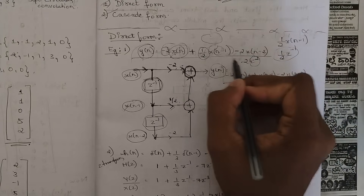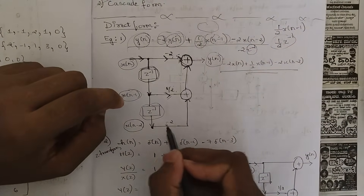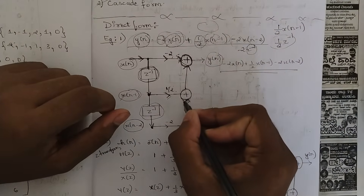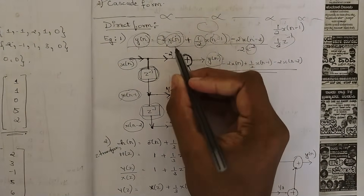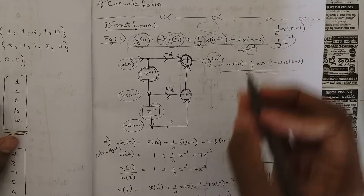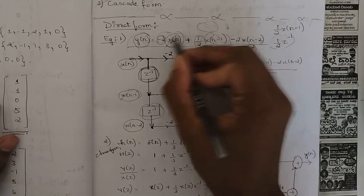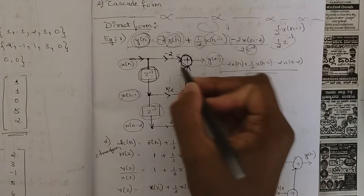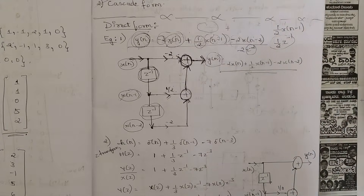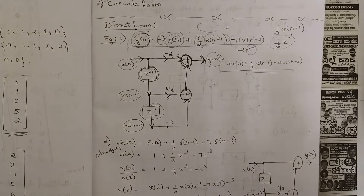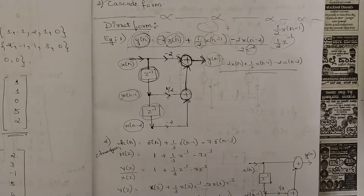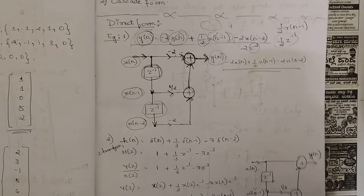After adding those two, the result gets added with the final term. From the X(N-2) point write coefficient -2, and it meets at the final summer. The answer we get at this point — after the two previous terms are added up — gets added to give the final answer Y(N). That is how you draw a typical direct form structure. This is straightforward; just remember that the Z-transform and Z-inverse play a key role here.